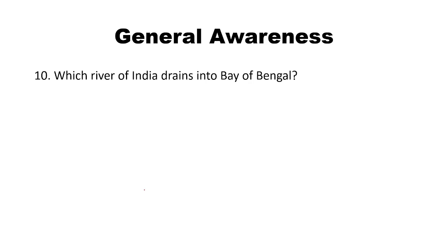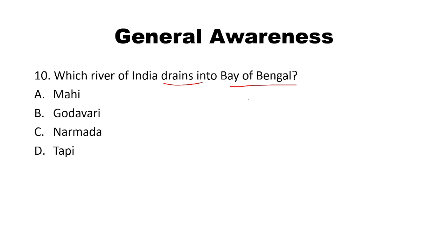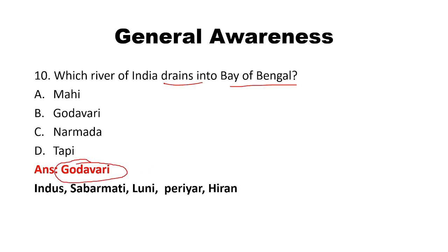Which river of India drains into the Bay of Bengal? Options: Mahi, Godavari, Narmada, Tapi. The answer is the Godavari river. Mahi, Narmada, Tapi, Sindhu, Sabarmati, Luni, Periyar — all these drain into the Arabian Sea.